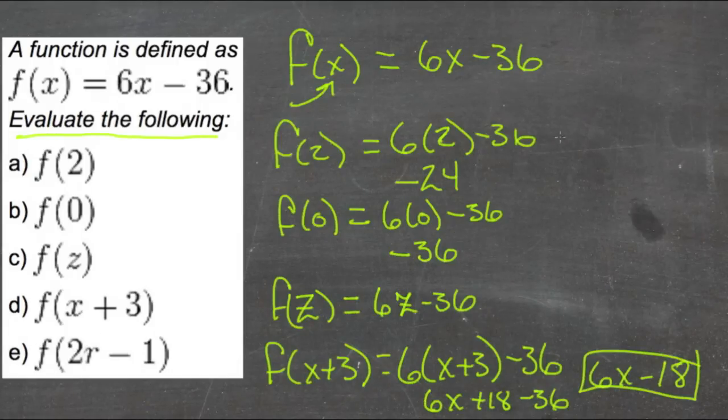And then for our last one, e, let's put it over here on the side, and I'll change colors too so it doesn't get too confusing. Last one, e, we have f of 2r minus 1, so we'd get 6 times 2r minus 1 minus 36.